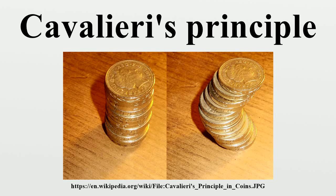Cones and pyramids: The fact that the volume of any pyramid, regardless of the shape of the base — whether circular as in the case of a cone, square as in the case of the Egyptian pyramids, or any other shape — is 1/3 times base times height, can be established by Cavalieri's principle if one knows only that it is true in one case.